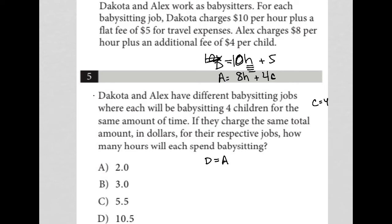Dakota charges $10 times the number of hours plus a $5 flat fee. Alex charges $8 times the number of hours plus 4 times the number of children. We know the number of children is 4, so I'm going to replace C with 4, which makes that term 16. So the equation becomes: 10H plus 5 equals 8H plus 16.